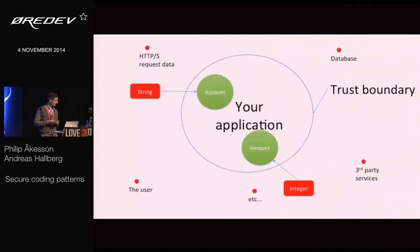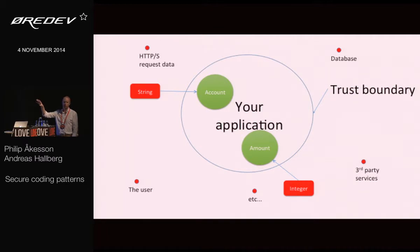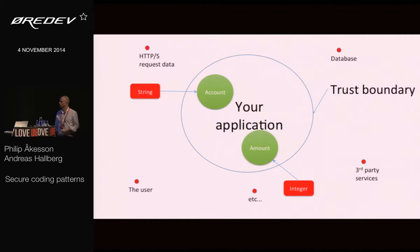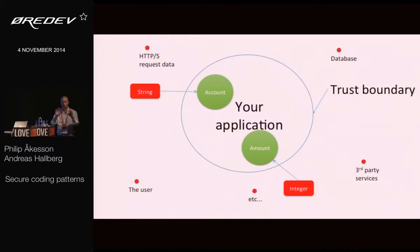In domain-driven security, instead of working with primitive untrusted data, we directly create domain objects with built-in validation during construction. There's no way to construct a domain object without passing validation — if it fails, you get an exception. Inside the trust boundary, we only use these objects. All functions that operate on trusted data should only take domain objects as parameters. That way, we assure that nothing untrusted ever gets inside our circle of trust. The trust boundary works itself out because everything you fetch will be a domain object and will have been validated.